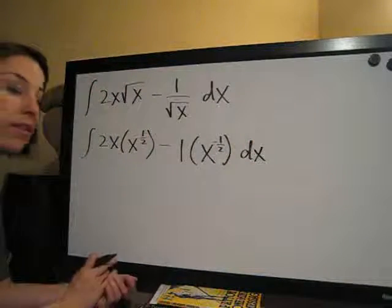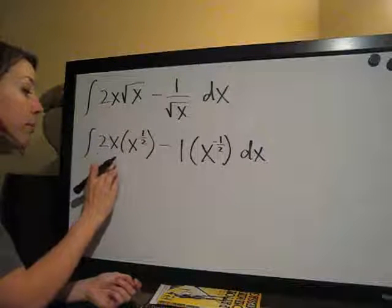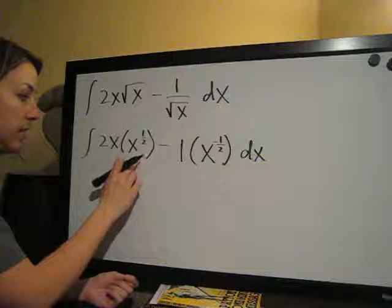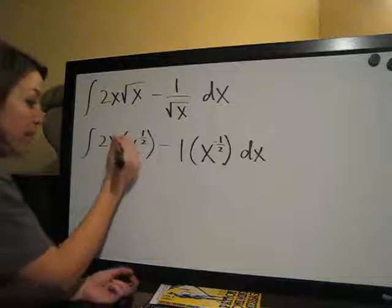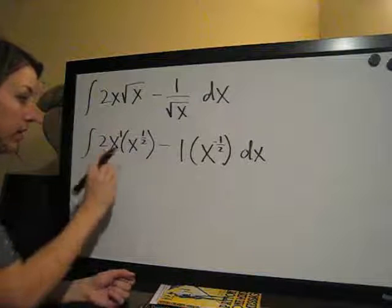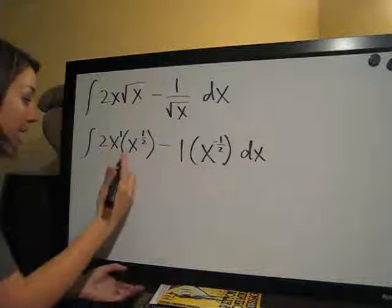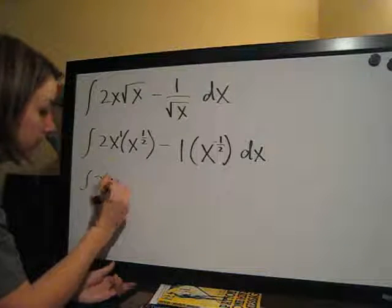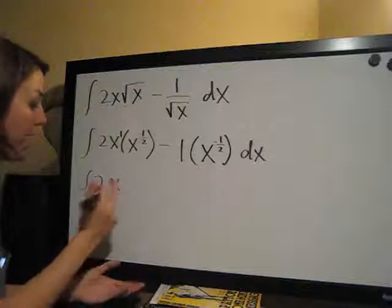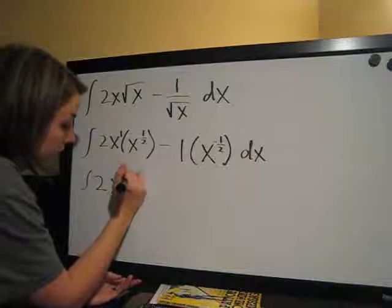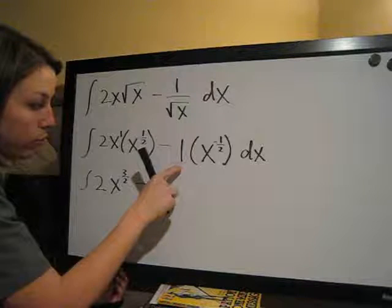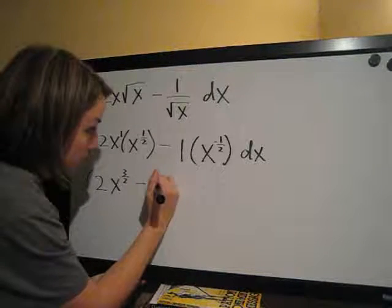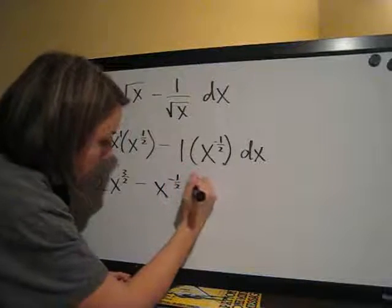So, now we simplify this before we integrate. When you are multiplying x's together like this, instead of multiplying the exponents, you add them. This is a 1 implied there for the exponent, so we are going to add those, so it's going to be the integral of 2x. 1 plus 1 half is 1 and a half, or 3 halves, so this is going to be x to the 3 halves, minus, of course, this 1 is implied here, so we can drop that. We are just going to say x to the negative 1 half dx.